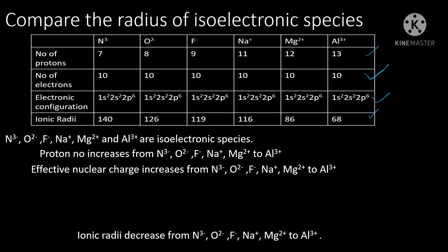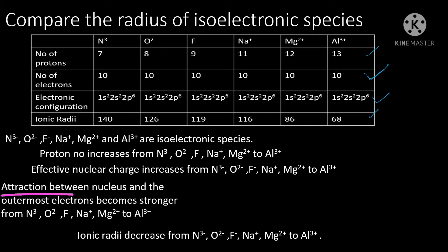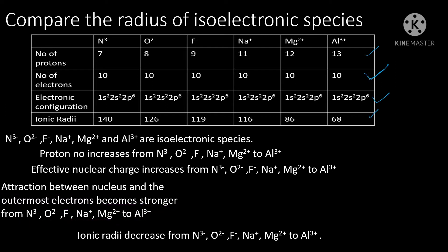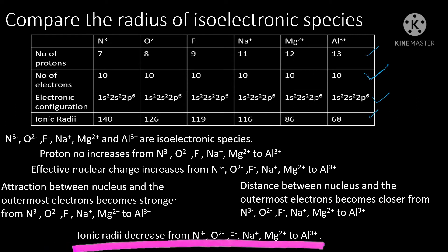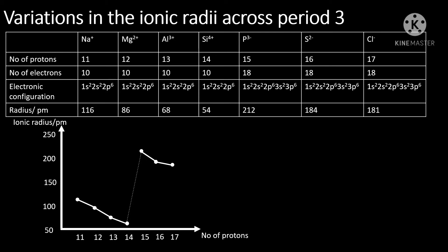As the effective nuclear charge increases, we expect the attraction of the nucleus on the outermost electrons to become stronger from nitrite ion, oxide ion, fluoride ion, sodium ion, magnesium ion to aluminum ion. Therefore, we expect the ionic radii to decrease from nitrite ion, oxide ion, fluoride ion, sodium ion, magnesium ion to aluminum ion. Now we look at variations in the ionic radii across period 3 elements.